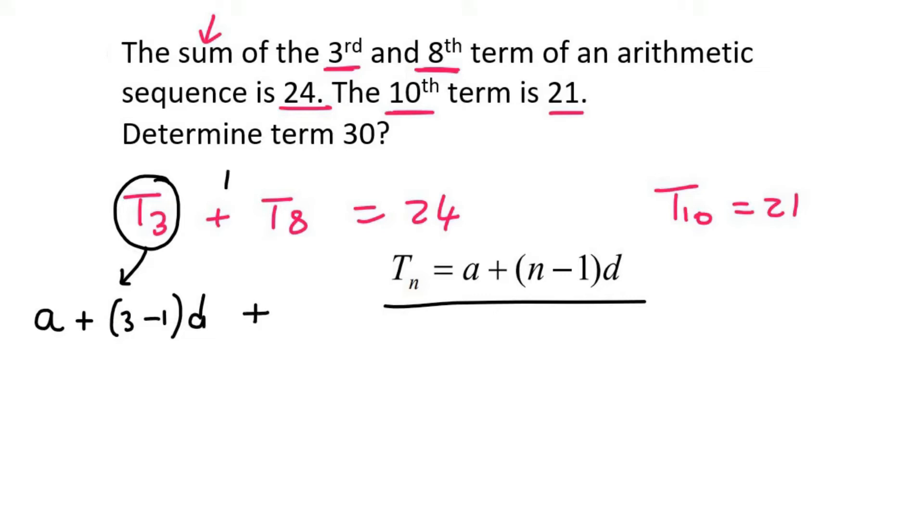Then it says plus, that's this plus. Then term 8 would be A plus 8 minus 1 times D. Can you see what I did there? I just used this formula on term 3 and then on term 8.